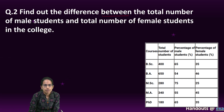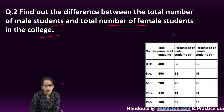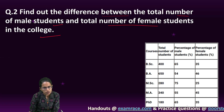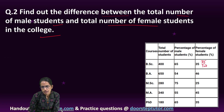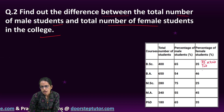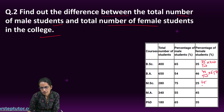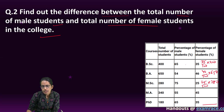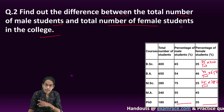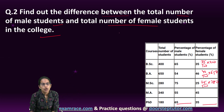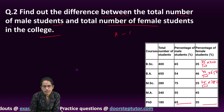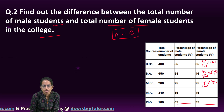Similarly, find the difference between the total number of male students and total number of female students. We already calculated the total number of male students. Now for the female students, it's the same thing: 35 divided by 100 into 400, 46 divided by 100 into 650. You would get the count for the female. Keep the two counts ready, and count A minus count B would give you the answer — as simple as that.